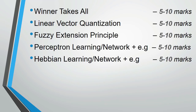The last slide is for those who have at least 2 to 3 days to study. These questions do appear, but they are supplementary. Topics include: competitive learning and winner-takes-all (5 or 10 marks), Linear Vector Quantization (5 to 10 marks), fuzzy extension principle (5 to 10 marks), perceptron learning with a network example (5 to 10 marks), and Hebbian learning with a network example (5 to 10 marks). All answers can be prepared from our ready-made notes.